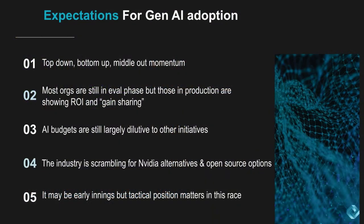Let's close with some final thoughts on expectations on Gen AI adoption. Top down, bottom up, middle out momentum — what do we mean by that? Clearly, the C-suite is asking what are we doing about Gen AI. There's tons of shadow AI going on. And then you've got middle management wanting to drive productivity and drop money to the bottom line. All constituents are really focusing in on trying to figure out where they can get more productivity out of Gen AI.